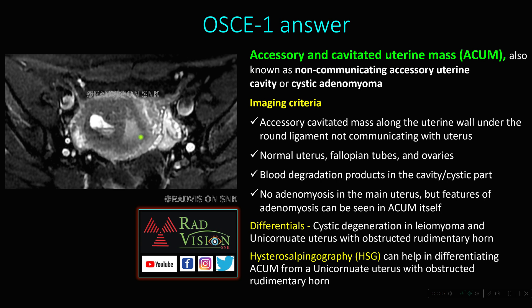What are the criteria used to diagnose ACUM? There should be an accessory cavitatory mass along the uterine wall under the round ligament, not communicating with the uterus or uterine cavity, with normal uterus, fallopian tubes and ovaries. Blood degradation products can be seen in the cavity, and importantly, no adenomyosis should be seen in the main uterus — though features of adenomyosis can be seen within the ACUM. The most common differentials are cystic degeneration in leiomyoma and unicornuate uterus with obstructed rudimentary horn.